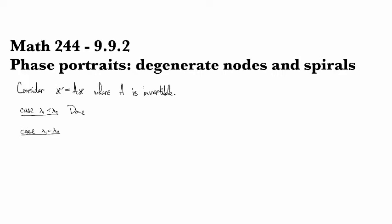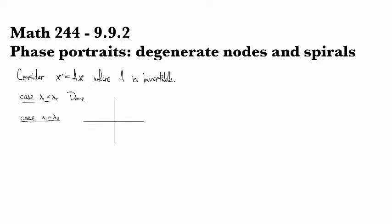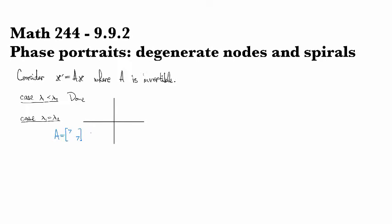Alright, so we're still looking at constant coefficient homogeneous systems where the coefficient matrix is invertible, and we just looked at the case for distinct real roots. Now let's look at the case for repeated root. So in the case of a repeated real root, then either one of two things happens. It can be the case that the coefficient matrix is a scalar of the identity matrix, so something that looks like 7, 7, or something like that.